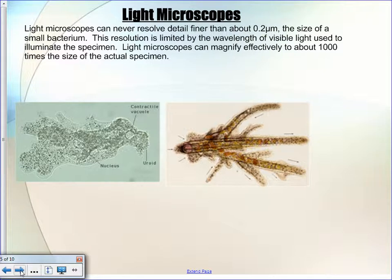Light microscopes can never resolve a detail finer than about 0.2 micrometers, which is the size of a small bacterium. But they're pretty handy when looking at protists. Light microscopes can magnify effectively to about 1,000 times the actual size of the specimen, so they're pretty effective at looking at even intracellular processes. Would you have to be experienced using a microscope at 1,000 times magnification? Yes — we kind of struggled at 400 times. Imagine how little a movement of the stage would be required to totally mess something up at 1,000 times.